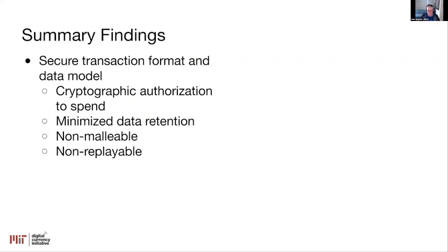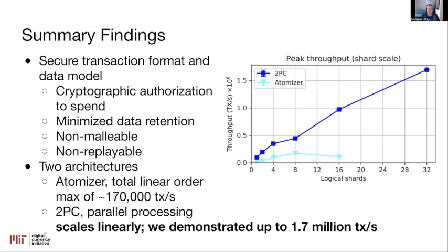Let's talk about the findings that probably made the most rounds. I mentioned there were two architectures with performance implications. The first architecture, the atomizer — capable of creating a total linear order — capped out pretty quickly at about 170,000 transactions per second. We know you can probably make it a little faster with some optimizations, but at the end of the day you have a single component that has to see every transaction in the system, so there is a fundamental bottleneck.